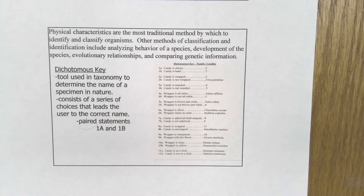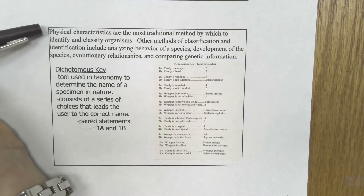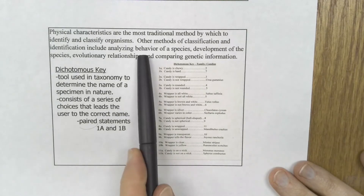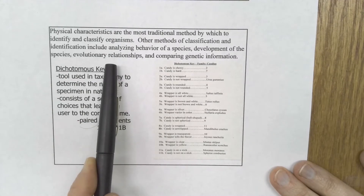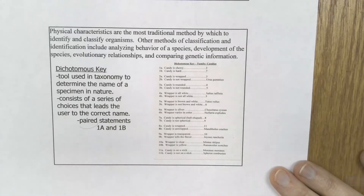This set of notes is about how to use a dichotomous key that you see to the left on the bottom of the slide. Historically, physical characteristics were the first way that scientists identified organisms — the most traditional method. We can also include looking at behavior, developmental patterns, evolutionary relationships, and DNA and RNA comparisons. That said, we're going to focus on physical characteristics when we use a dichotomous key.